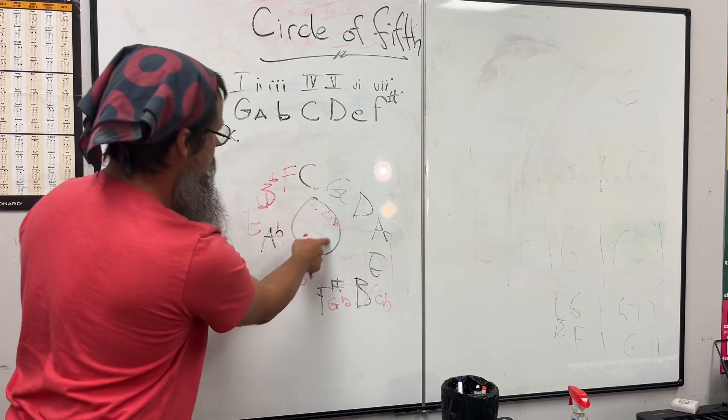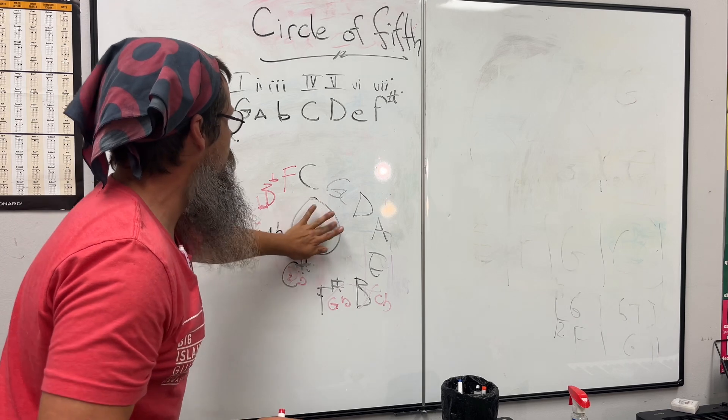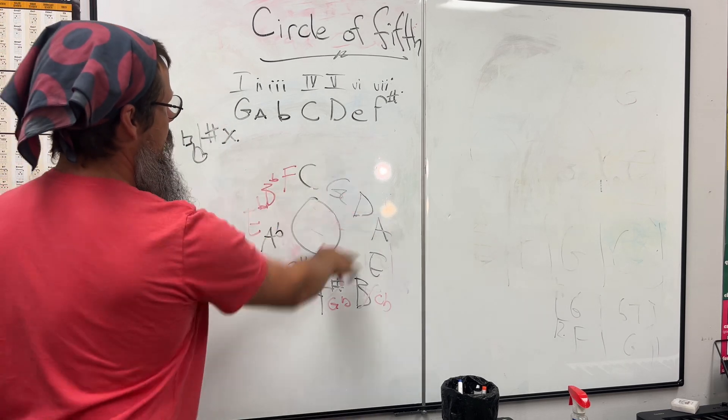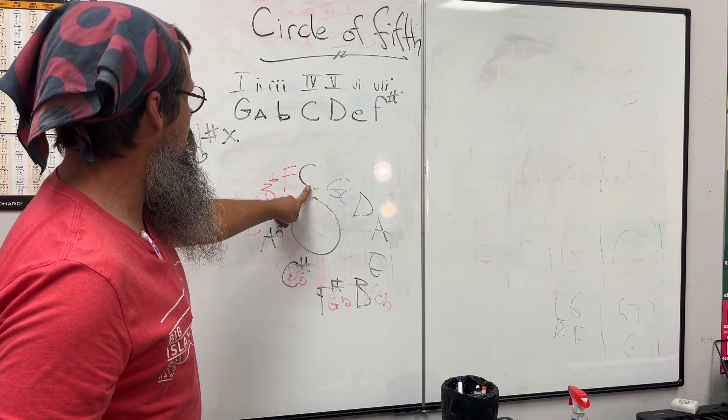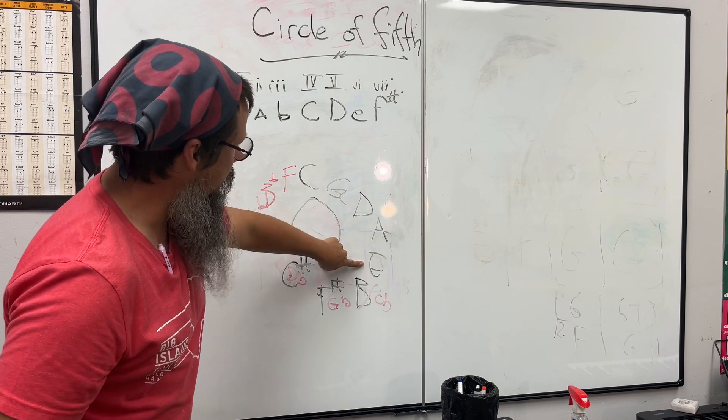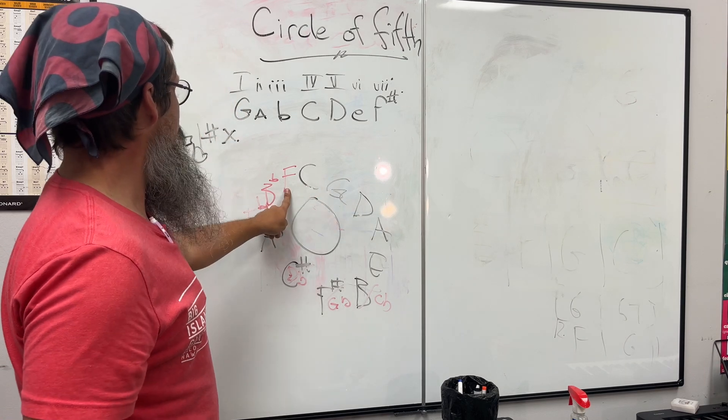So when I go around here you can write in all the relative minors for these: A, E, B, F sharp minor. However, if you go four away you'll find that the relative minor is there, so I don't worry about those right in the beginning. Right here I just kind of see them as C major, D minor, E minor, F major, G major, A minor, B diminished.